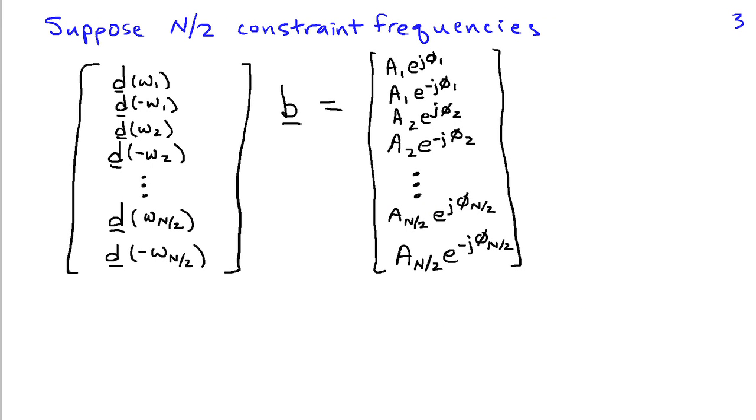We can combine these into a system of linear equations by assuming that there's a total of N/2 frequencies at which we want to specify the response. So I've got frequencies ω_1, ω_2, through ω_(N/2), and then the negative frequencies as well. At frequency ω_1, I want the frequency response to equal A_1 e^(jφ_1). At frequency ω_2, A_2 e^(jφ_2). At frequency ω_(N/2), we want the response to be A_(N/2) e^(jφ_(N/2)), and then we have the conjugate of those responses at the negative frequencies.